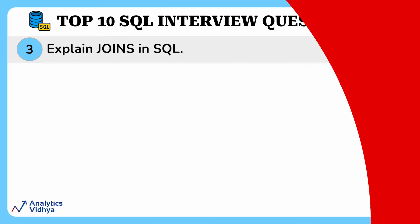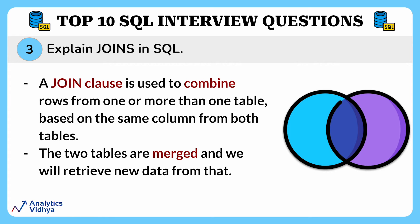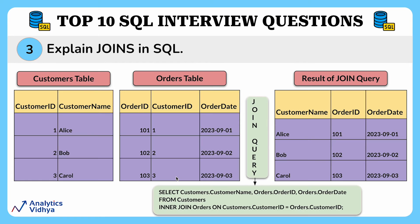Our next question is: explain joins in SQL. This is one of the most common questions asked in interviews. A join clause is used to combine rows from one or more tables based on a common column from both tables. The two tables are merged and we then retrieve new data from that. Imagine you have two separate lists — one with customer information and another with order details. We want to see customers along with the orders they have placed, so we use an inner join, which combines data from both tables based on a common key like customer ID. The result is a neat table showing customer names and the orders they made.